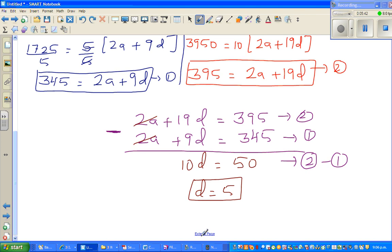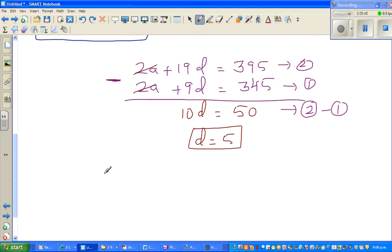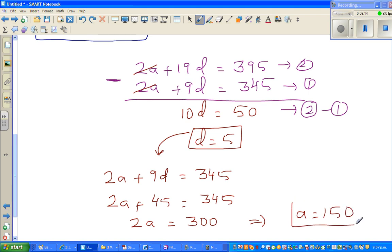Now we need to find a. Let me write the smaller equation: 2a plus 9d is 345. I'm going to put d equals 5 back into this equation, so 2a plus 9 times 5, which is 45, equals 345. If you take away 45 from both sides, 2a equals 300, which implies a is 150. So we know a and d.